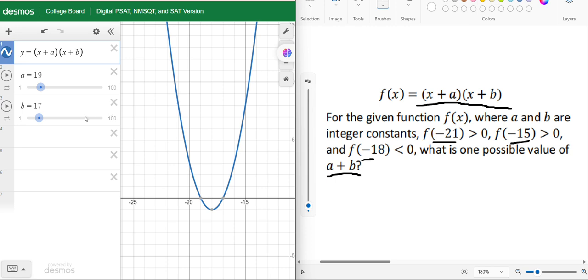f(-18) is less than zero, f(-15) is positive, f(-21) is positive. So our a plus b becomes 36. Remember there may be many values of a plus b like 36, 37, but we only need one value. In this question, our one possible value is 36.